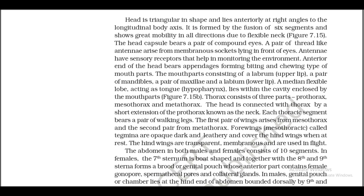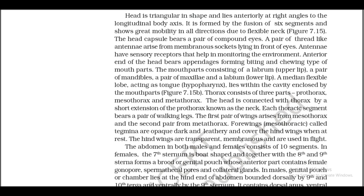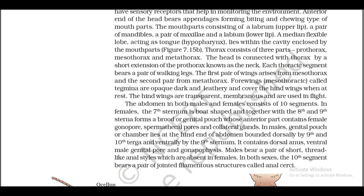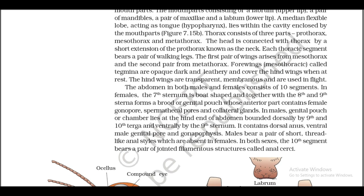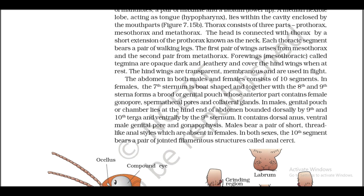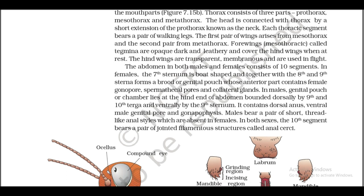The mouth parts consist of a labrum (upper lip), a pair of mandibles, a pair of maxillae, and a labium (lower lip). A median flexible lobe acting as a tongue, the hypopharynx, lies within the cavity enclosed by the mouth parts (figure 7.15b). The thorax consists of three parts: prothorax, mesothorax, and metathorax. The head is connected to the thorax by a short extension of the prothorax known as the neck. Each thoracic segment bears a pair of walking legs. The first pair of wings arises from the mesothorax and the second pair from the metathorax.